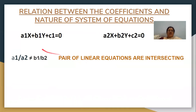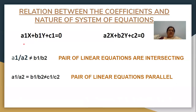When you divide the coefficient of x in equation one by the coefficient of x in equation two — that is a1 by a2 — and compare with b1 by b2: when these two are not equal, you can say that the pair of linear equations are intersecting. The second condition: when a1 by a2 is equal to b1 by b2, but not equal to c1 by c2, the lines will be parallel.